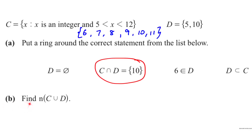Part (b): Find the number of elements in C ∪ D. Union means you combine the elements of C and D, but elements common to both are only counted once. Counting: 6, 7, 8, 9, 10, 11 from C and 5 from D — we do not count 10 again. Therefore the number of elements in C ∪ D is 7.